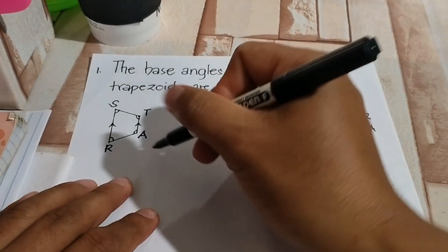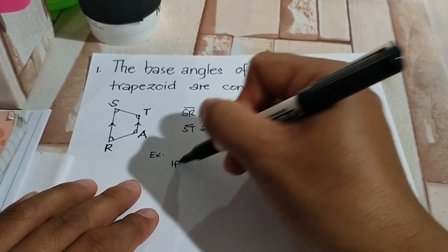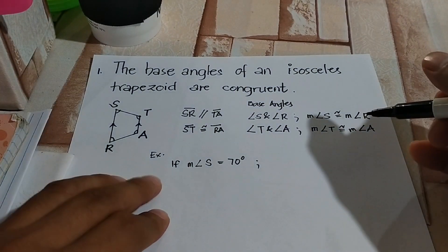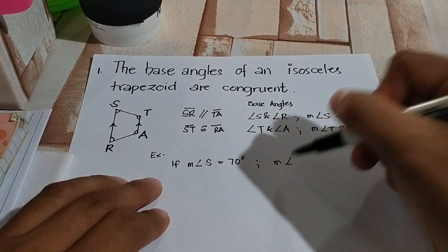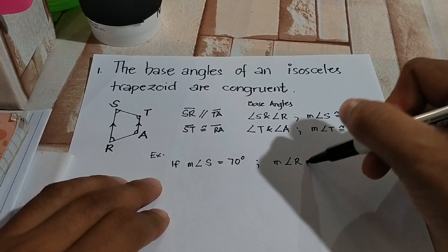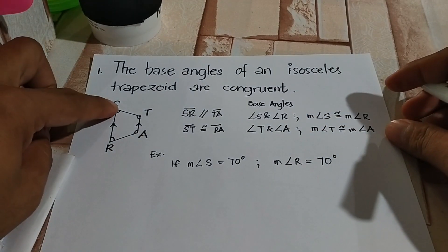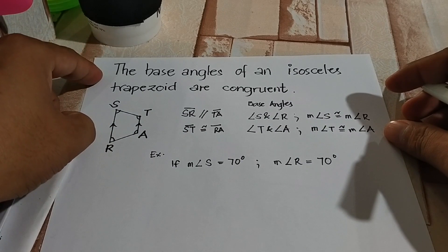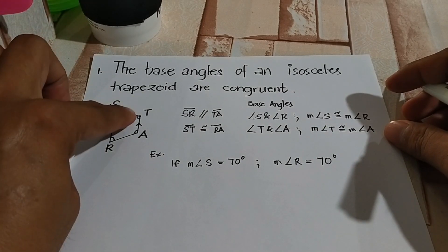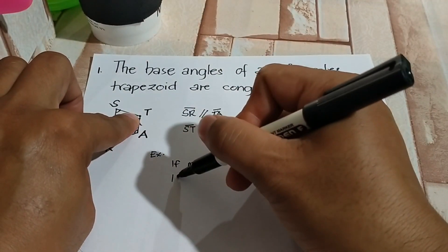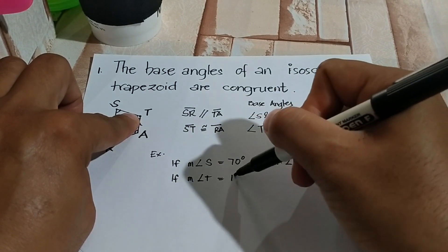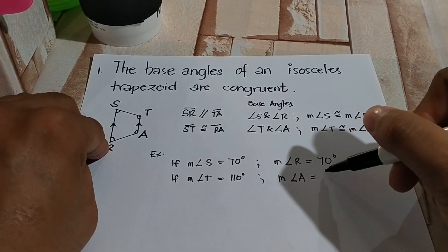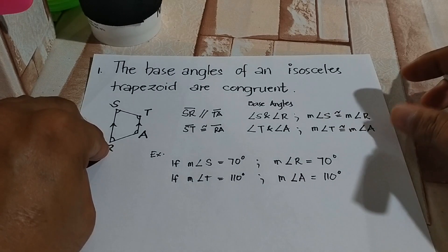Let's take an example. If the measure of angle S is equal to 70 degrees, then the measure of angle R is also equal to 70 degrees, because of theorem number 1. And if the measure of angle T is equal to 110 degrees, then the measure of angle A is also equal to 110 degrees.